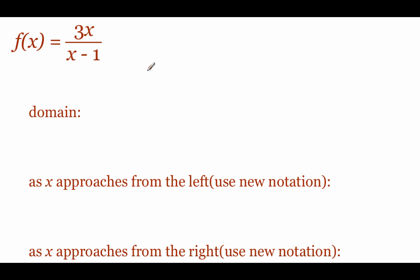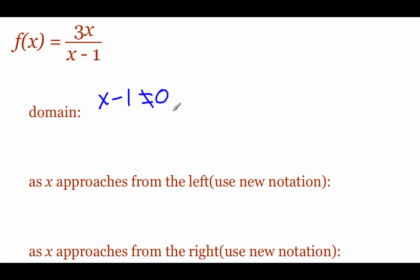Now we're going to run through the next example: f of x equals 3x over x minus one. The first thing we want to do is find the domain. Since it's a fractional setup, we need to make sure the denominator isn't zero. So we take the denominator and set it not equal to zero, then solve: x cannot equal one.